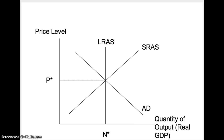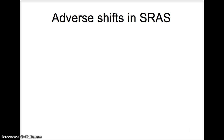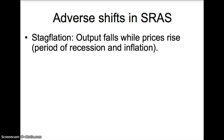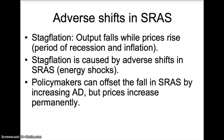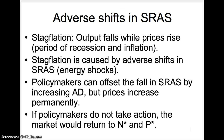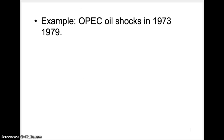Stagflation is when output falls while prices rise — a period of simultaneous recession and inflation. Stagflation is caused by adverse shifts in the short-run aggregate supply curve, typically due to energy shocks. Policymakers can offset the fall in SRAS by increasing aggregate demand, but prices increase permanently. If policymakers do not take action, the market would eventually return to the natural rate of output and the equilibrium price level.